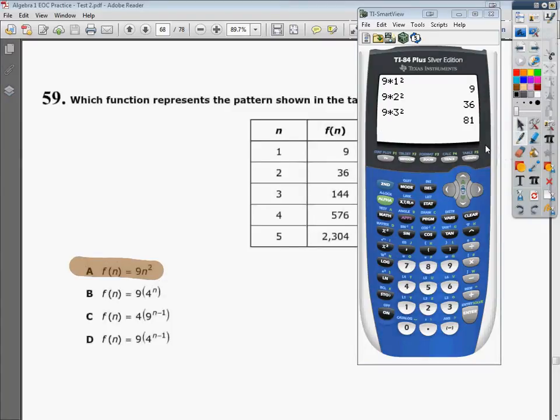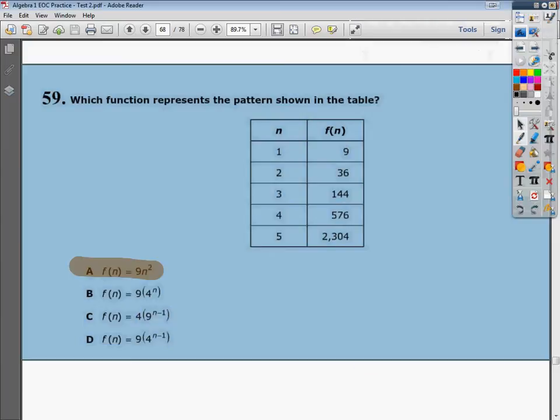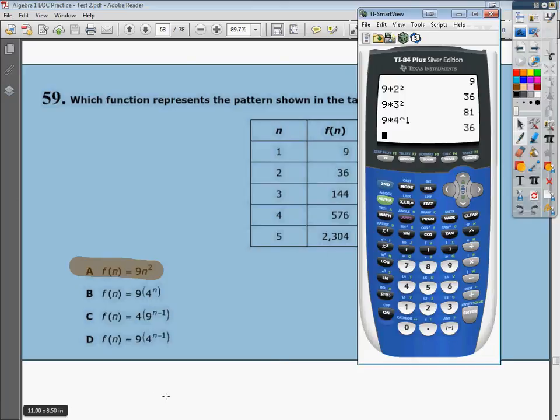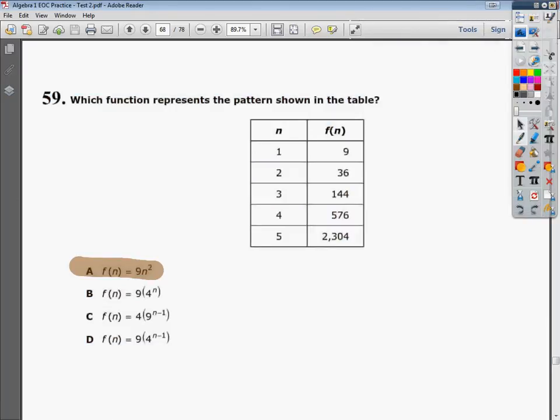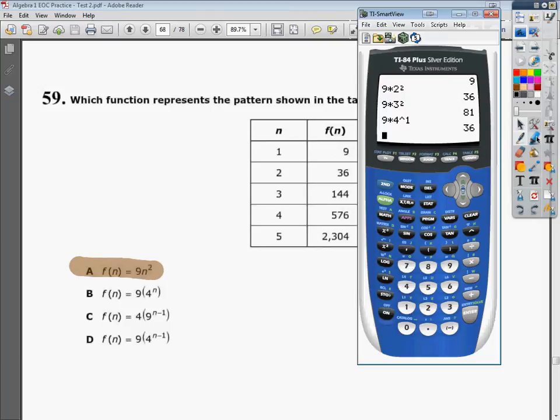The next one I'm going to look at is B. So I'll do 9 times 4 to the first power, because it says to plug in n as the exponent. It gives me 36. So when I plugged in 1, I was supposed to get 9. But instead, when I plugged in 1, I got 36, which means something went terribly wrong. So I can mark that one out as well.